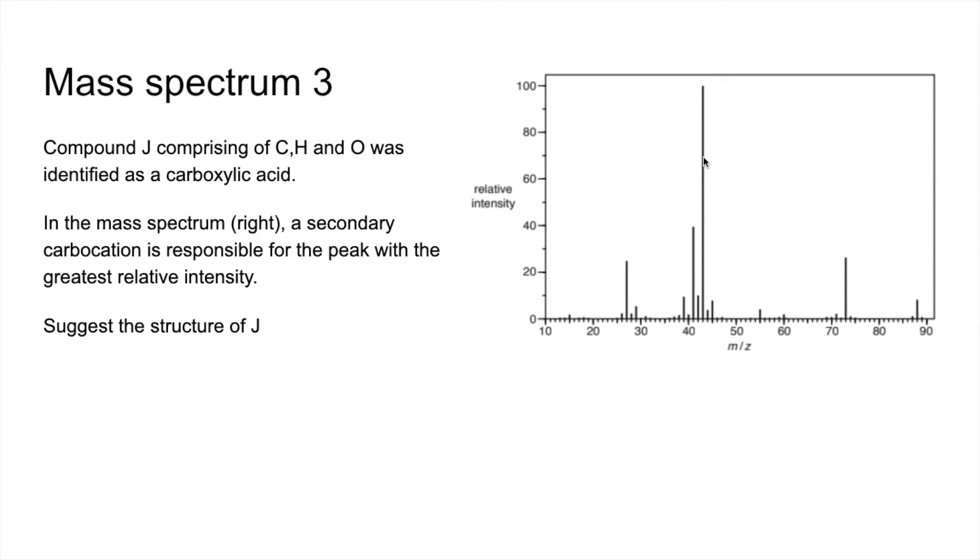We know that this is a secondary carbocation. So the C with the plus sign on has got to have two carbons directly attached. We've got to suggest a structure for compound J. So again, first thing I'm doing, identify that molecular ion peak so we know the MR of J is 88.